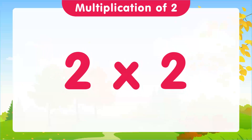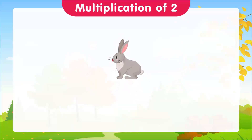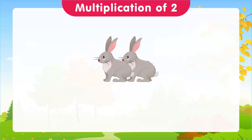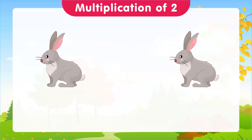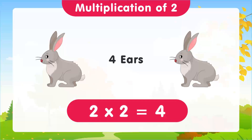Now, let's move on to 2 times 2. This time, we're going to use rabbits. Imagine we have 2 rabbits. How many ears do they have between them? 4 ears. And that's our second multiplication: 2 times 2 is equal to 4.